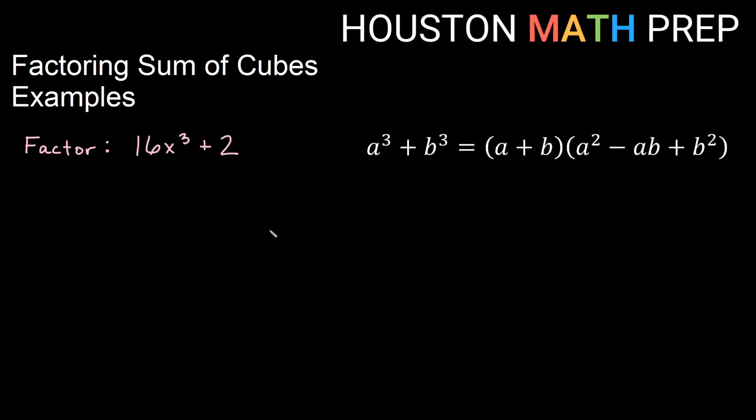Here we've got 16x³ + 2, and you might notice this is not really a perfect cube. 16 is not a perfect cube. The x³ is, but the 16 is not. 2 is also not a perfect cube. If you notice, we have here a greatest common factor, so don't forget when you're factoring anything, even sum and difference of cubes, be sure that you look for greatest common factor first. So the common factor here is 2.